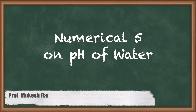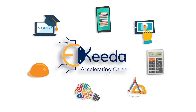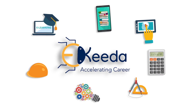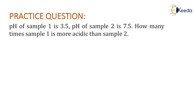Hello students, today we are going to discuss the 5th numerical of pH. The question gives us pH of sample 1 as 3.5 and pH of sample 2 as 7.5. The question asks how many times sample 1 is more acidic than sample 2.